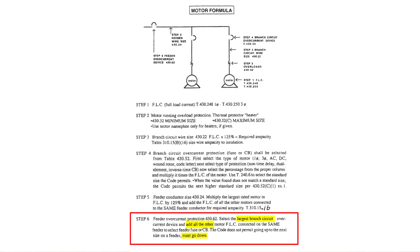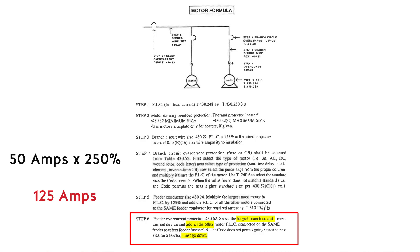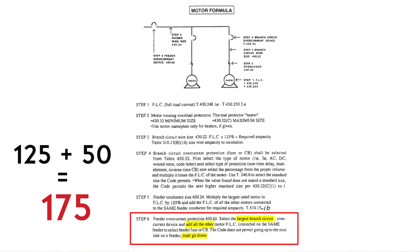Let's say we're using a standard breaker — we've got a 50-amp motor and two of them. The inverse time circuit breaker is 250%, so 50 amps times 250% equals 125 amps. Take the largest branch circuit breaker — 125 amps — then add the FLC of the other motor, which is 50 amps. So 125 plus 50 equals 175 amps. The feeder circuit breaker will be 175 amps, as long as it's a standard size.